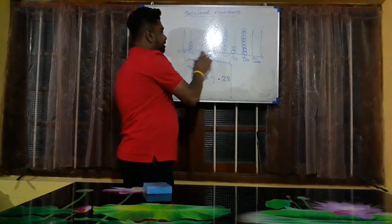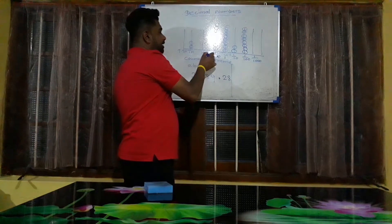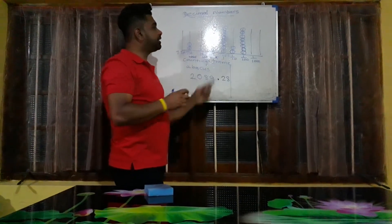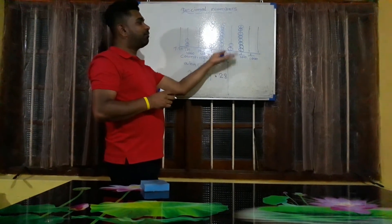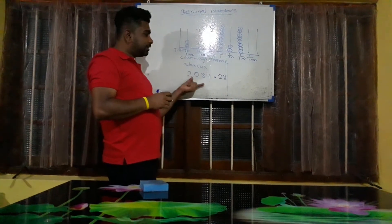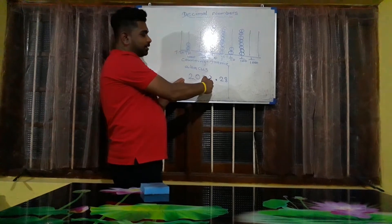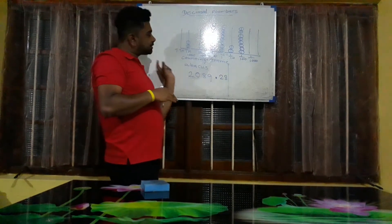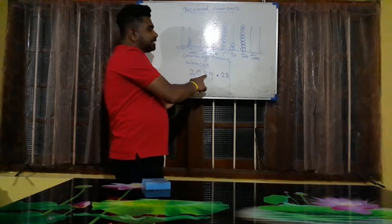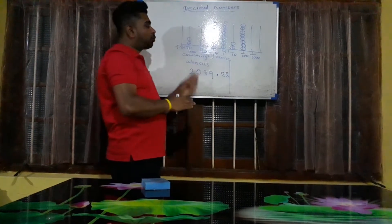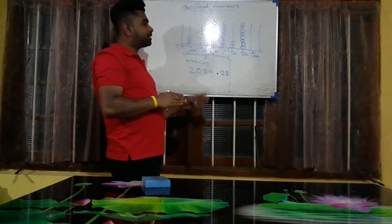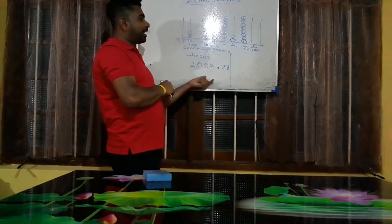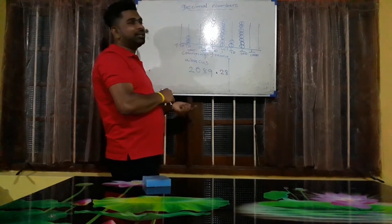Here if I use these numbers: 1 place, 10 place, 100 place, 1000 place — like that we can write. For the strings after the decimal point, I use 1 upon 10, 1 upon 100, and 1 upon 1000. This part we call the whole number, and after the decimal point, these numbers we call decimal numbers. So this number is 2089.28.